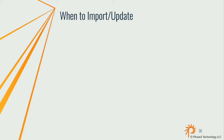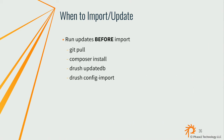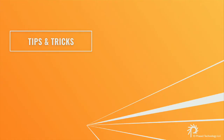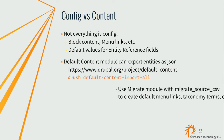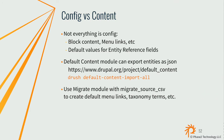A common question: when do you run config import versus database updates, and in what order? You do a git pull to bring in all your code changes including config, then run database updates first, then config import. Note that Config Split currently only supports Drush 8 — if you've already upgraded to Drush 9, the Drush commands won't work, which is a separate problem.